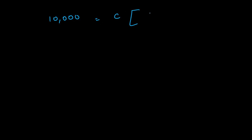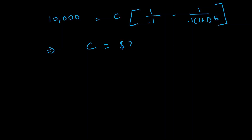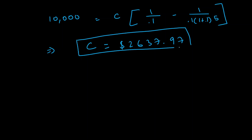The present value is ten thousand dollars, and r is ten percent, which is 0.1. So that's going to be: C = 10,000 divided by [1 minus 1 divided by (0.1 times (1 + 0.1) raised to the power of 5)]. Doing the math, the single fixed payment comes out to be equal to two thousand six hundred thirty-seven point nine seven dollars. This is the fixed payment we need to make to completely pay back the loan in five years.